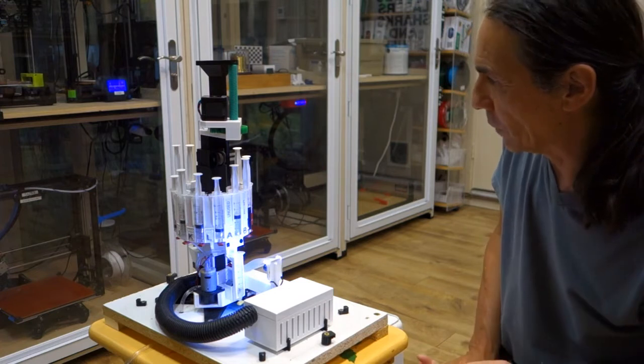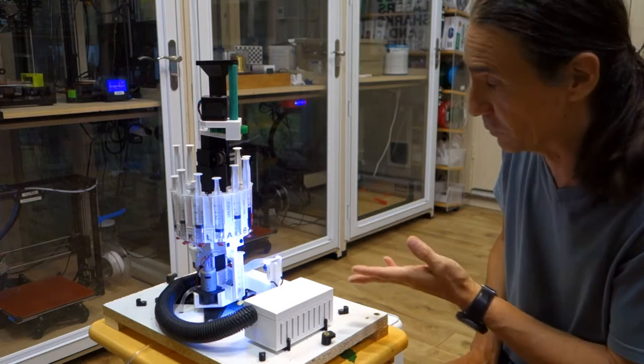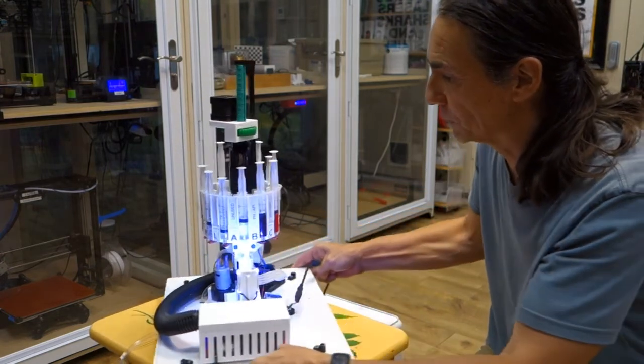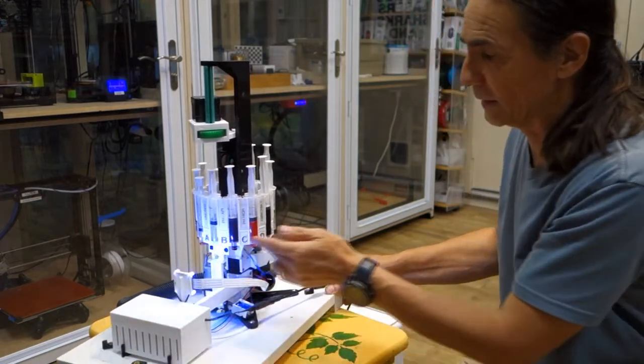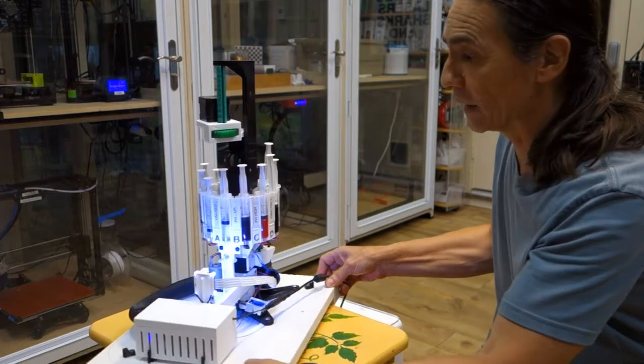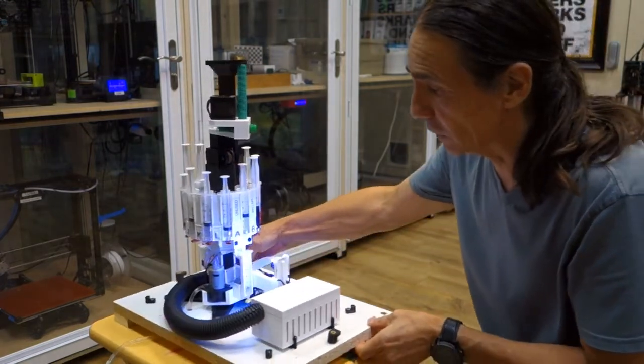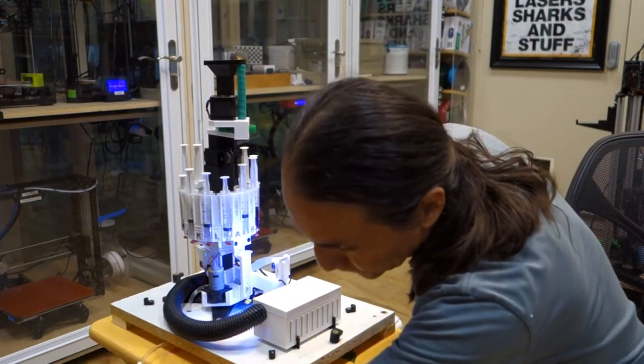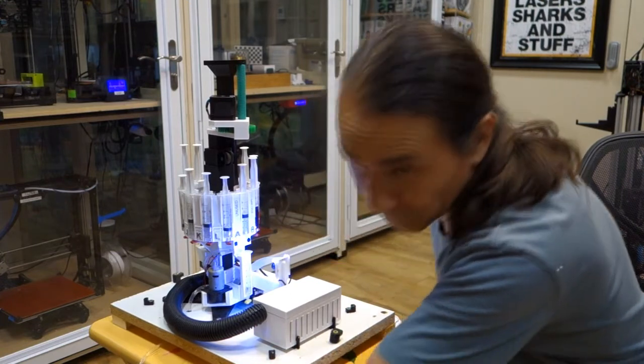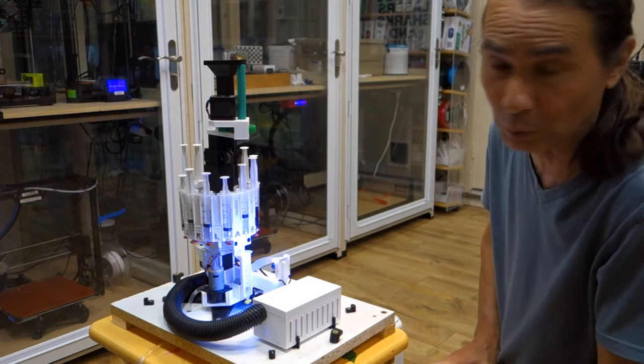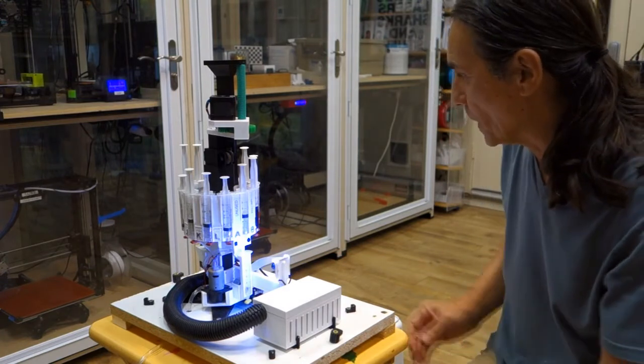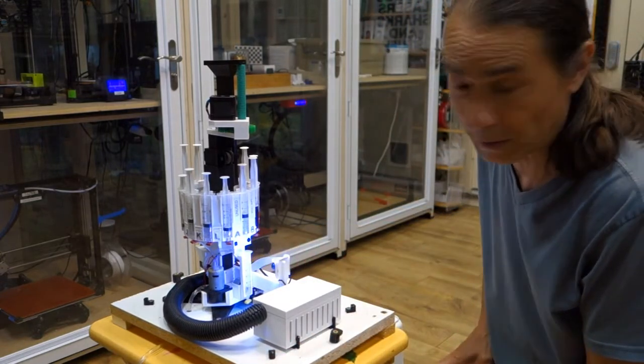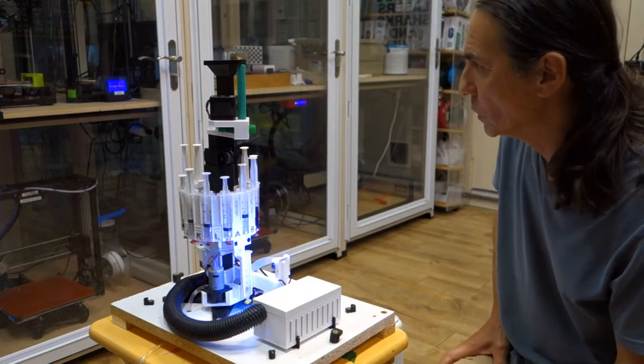So what we have here is a system that runs colorimetric tests. Now it's loaded up right now with reagents from the API test kit. But it'll actually run any tests that you have that are colorimetric. Right now it's just drawing in water from a jar of tap water and the exhaust is going down into another jar. But the idea of course is that this will pull in water from your aquatic environment that you're trying to measure.